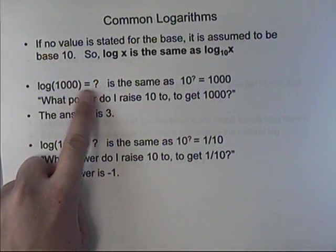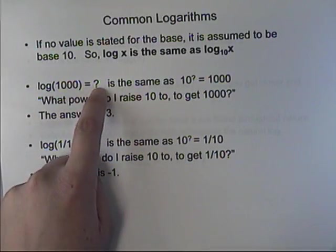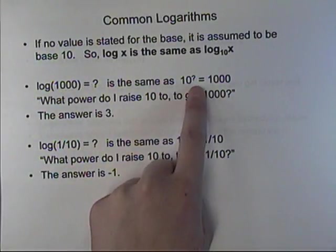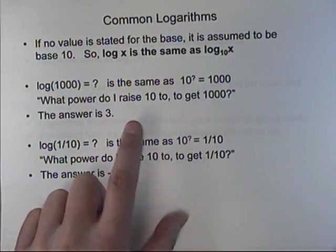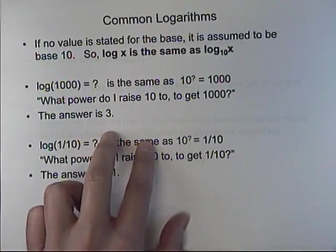So if you set that equal to a question mark, it would be 10 to what power equals a thousand, as I've stated here. And the answer is 3, because 10 times 10 is 100, 100 times 10 is a thousand.